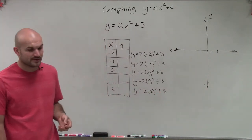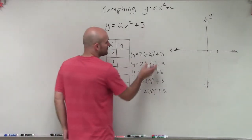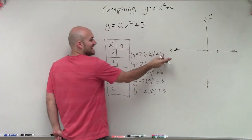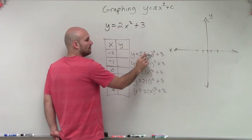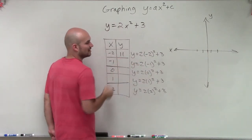Now it's important when doing this, we also need to make sure we follow our order of operations. Make sure we square, then multiply, then add. So negative 2 squared is going to be a positive 4. Positive 4 times 2 is 8. 8 plus 3 is 11.